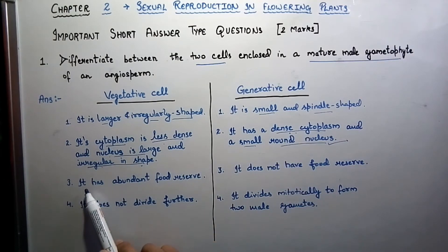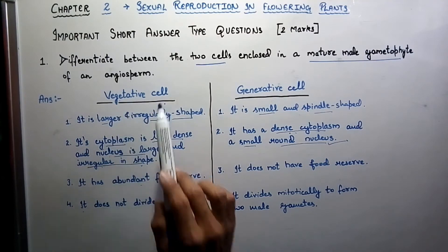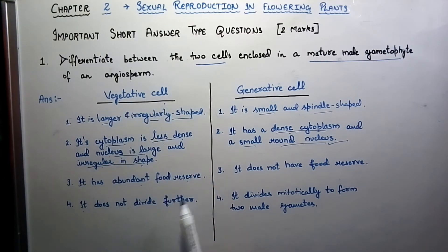Third: the vegetative cell has abundant food reserve, whereas the generative cell does not have food reserve. Fourth and last: the vegetative cell does not divide further, whereas the generative cell goes for mitotic division to form two male gametes.